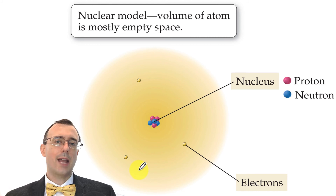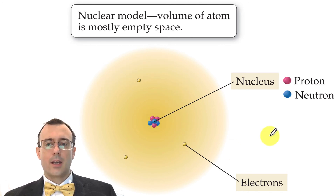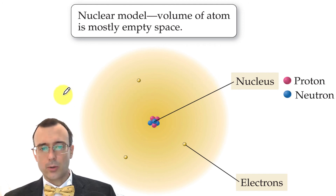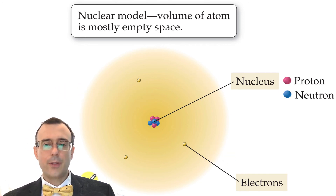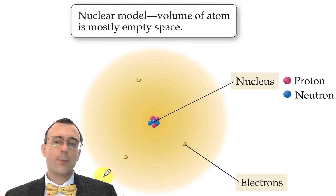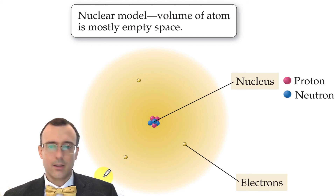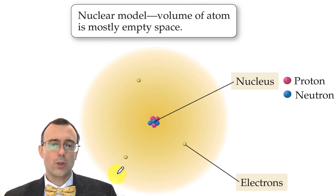That led to today's nuclear model of the atom — the nucleus is in the middle and electrons are flying all around. Alpha particles could come in and bump into the nucleus and ricochet off in different directions, but most of the time go straight through the atom. The atom is mostly empty space. The protons and neutrons are so small that if the atom were the size of a football stadium, protons and neutrons would be about the size of grains of sand.